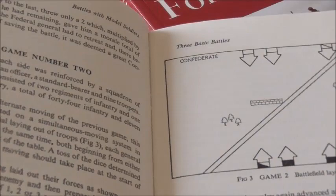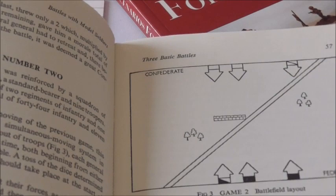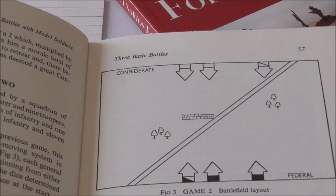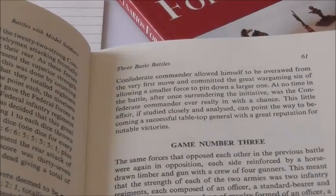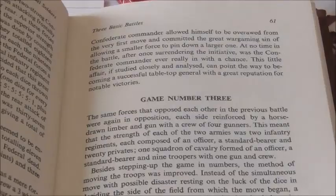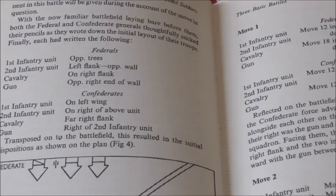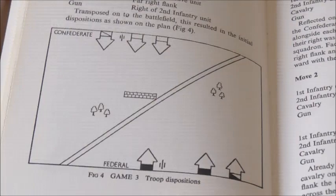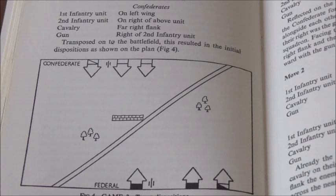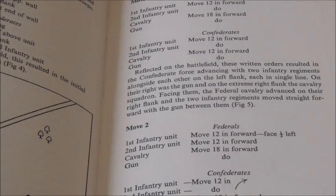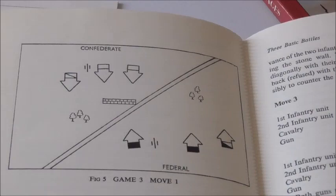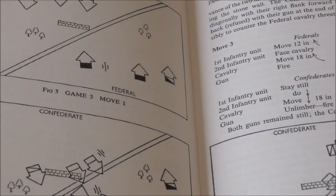Game number two he's added a cavalry unit to each side, so now we're increasing the rules. We've got two units of infantry and a cavalry regiment apiece, and I shall follow the same procedure using his rules. Finally, game number three adds a unit of artillery for each side — same battlefield throughout — and he goes through all the movement this time with written orders. I shall show all that on the tabletop as the units come together.